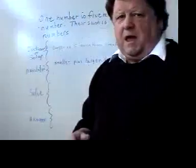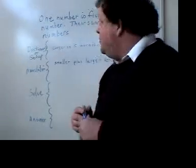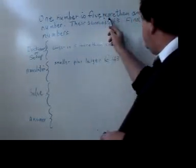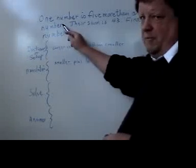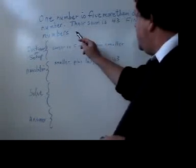What we have here is a sample of two different variables. So I'll read it for you. It may be a bit hard to see. One number is five more than another number. Their sum is forty-three. Find the numbers.